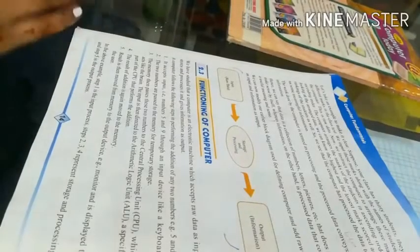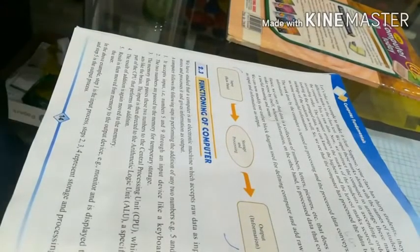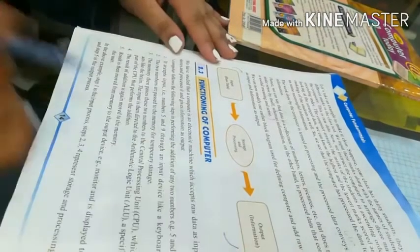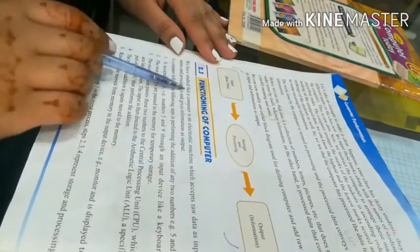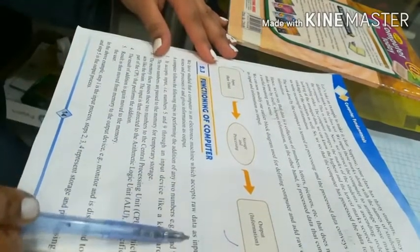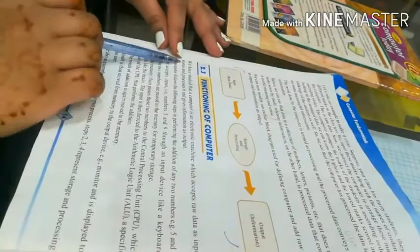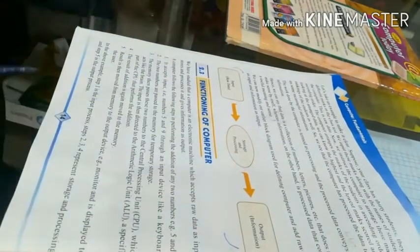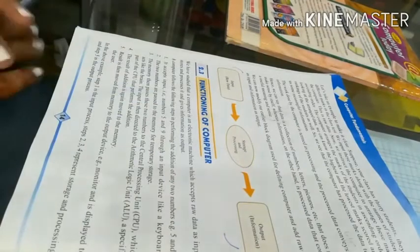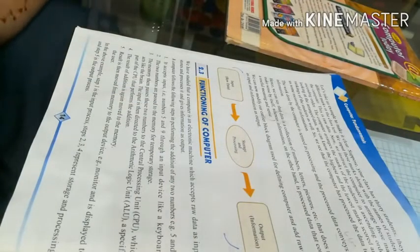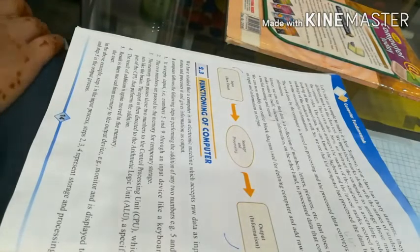Assalamu alaykum students, welcome back. Today we are going to learn about functioning of computer. We have studied that a computer is an electronic machine which accepts raw data as input, stores and processes it, and gives information as output.